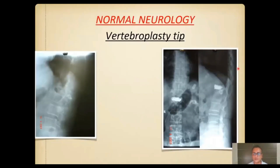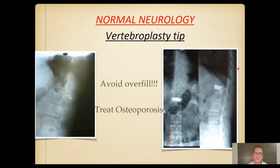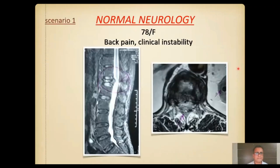For patients with normal neurology in whom you are just going to do a vertebroplasty, an important tip is to avoid overfilling of the cement — as you can see in this case, the cement looks a little bit significantly pushed. Avoid overfilling of cement, and importantly, always medically treat the osteoporosis. This patient had a conus or cord compression but only instability and back pain with no significant neurology, needing support for walking.